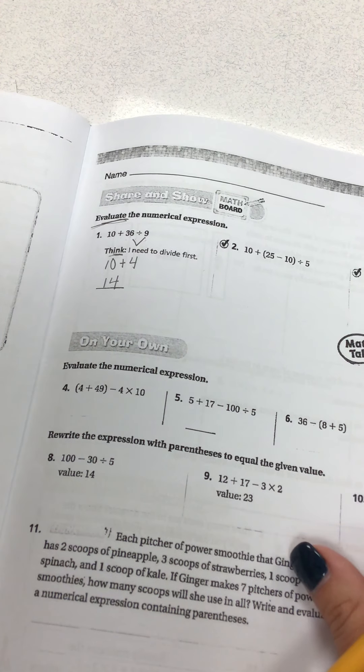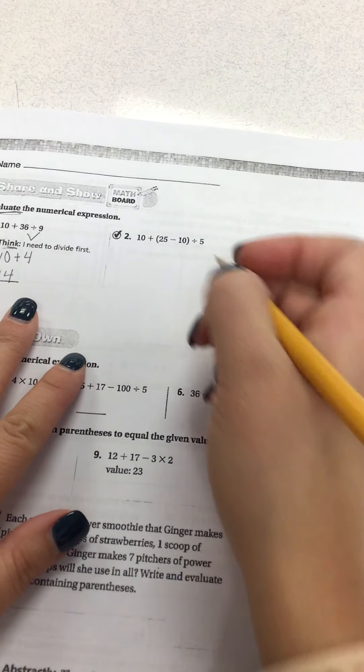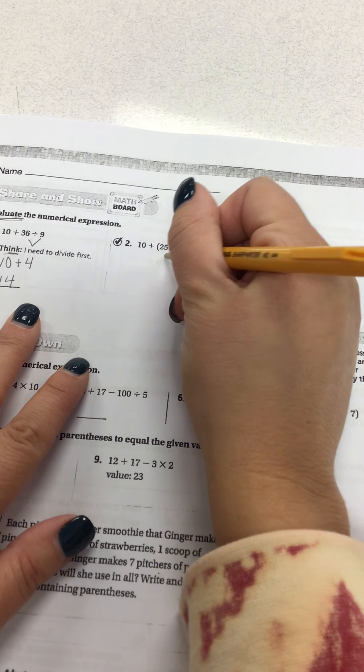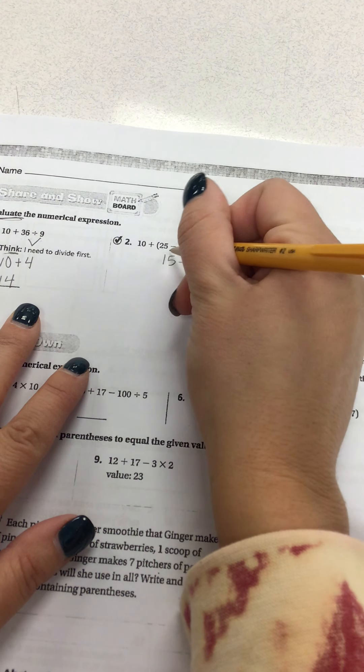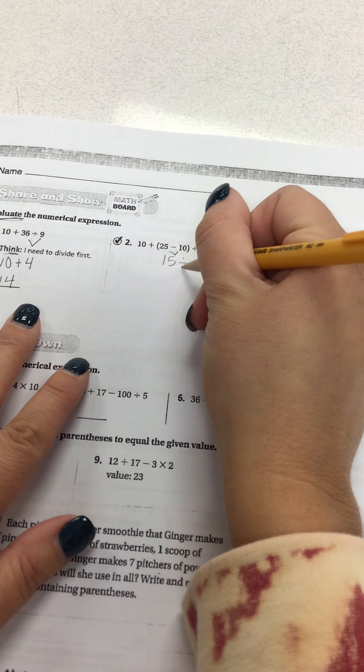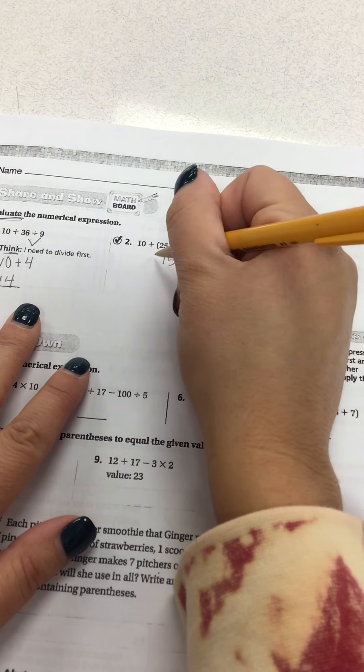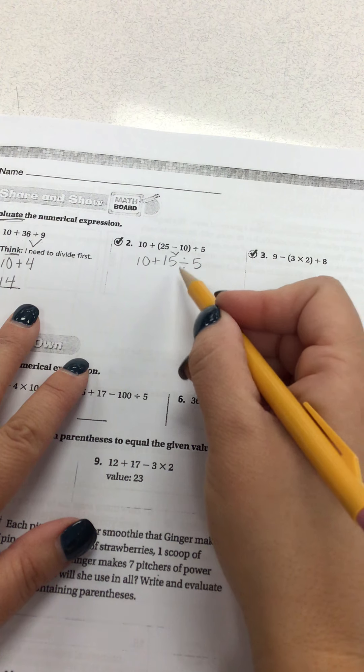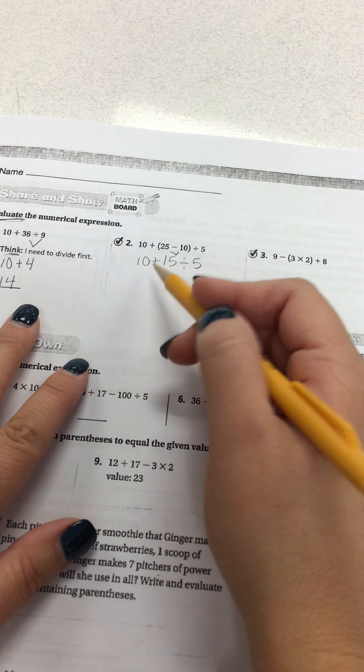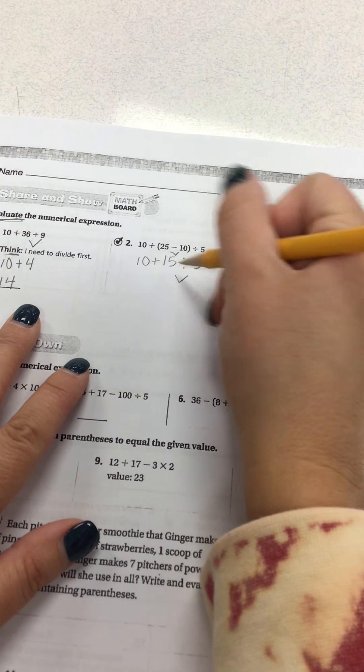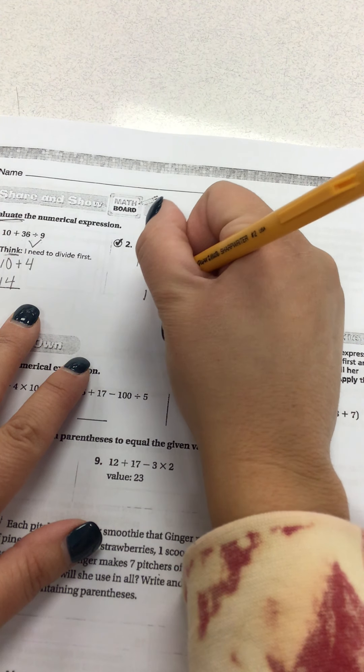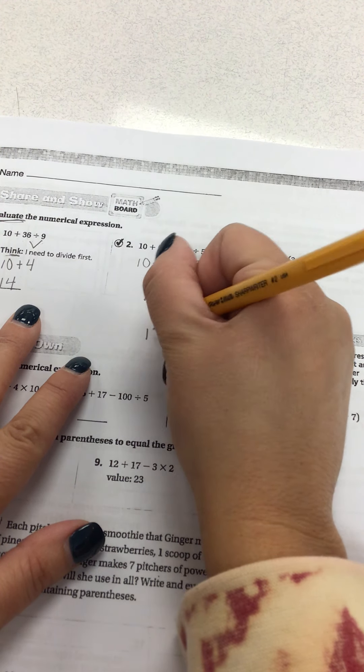Number 2. I'm going to start with my parentheses. 25 minus 10 is 15. Bring down divided by 5 and plus 10. Division comes before adding. So I'm going to divide. 15 divided by 5 is 3. Bring down my plus 10. The answer is 13.